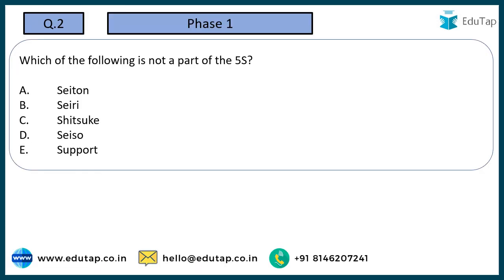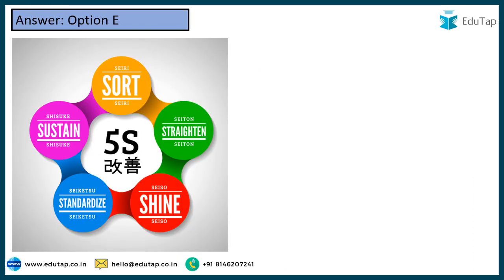Coming to the next one: which of the following is not a part of 5S? Options are Seton, Seri, Shitsuke, Sisu, Support. All of these are Japanese terms except option number E — 'Support' — which is not a Japanese term. So you would mark option number E as the correct answer. You have to be aware of these 5S terms and their meanings, as they are used in Japanese production management systems and may be asked in the upcoming exam as well.